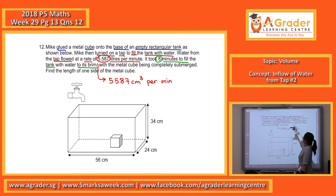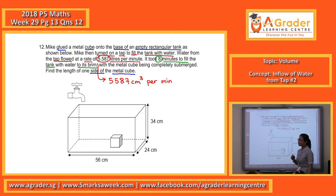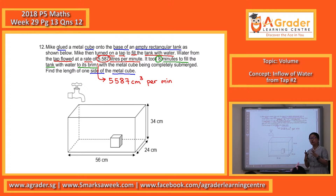So with the metal cube being completely submerged, you are supposed to find the side of the metal cube. A cube means all sides are equal. You need the volume first before you can do what we call the cube root. So you need volume.